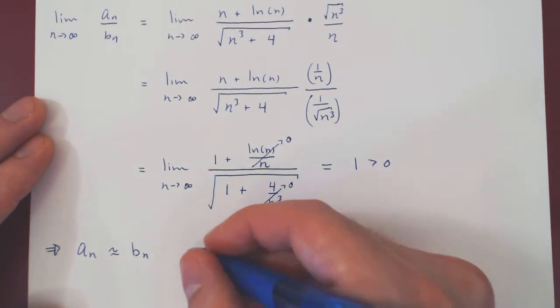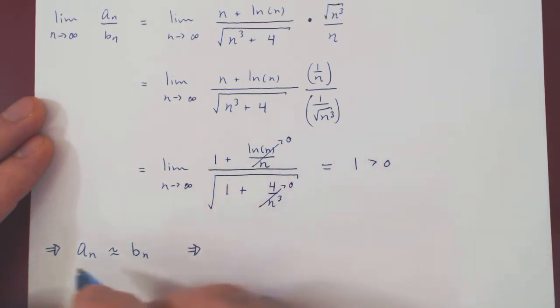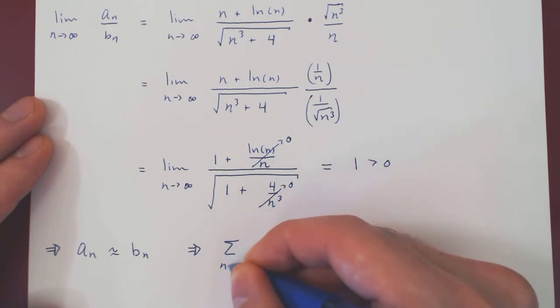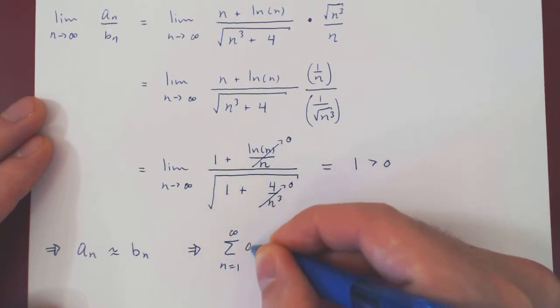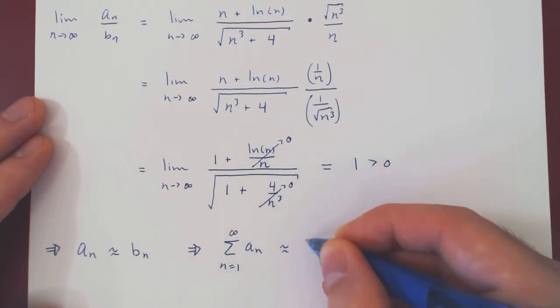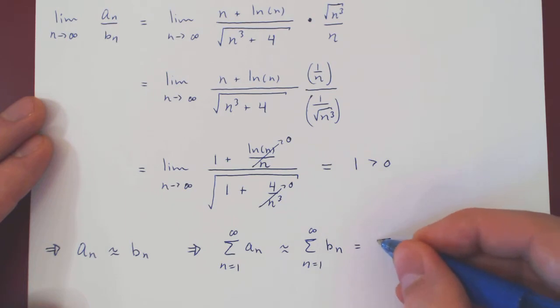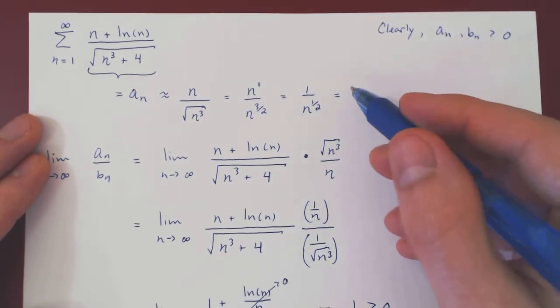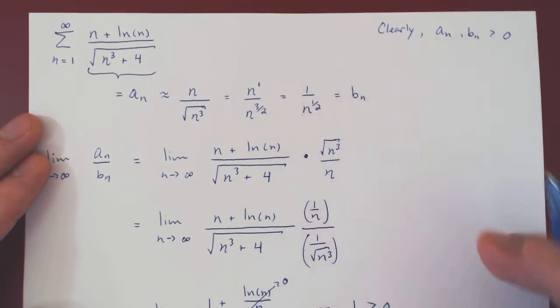So, we can sum up the terms. If an is roughly bn when n is large, then the sum of an will be roughly the sum of bn. And now, of course, we'll replace bn by its simplified form. And bn, simplified if you recall, is simply 1 over n to the 1 half.